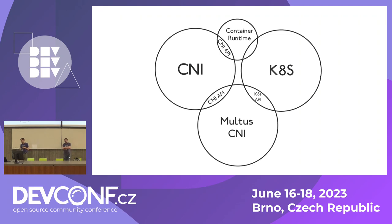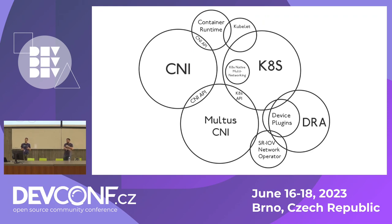These multiple interfaces might not only be virtualized interfaces. Sometimes you need to tap into a physical host interface, like SR-IOV. For that you need a device plugin, an SR-IOV network operator — which requires Multus, by the way — to get your pod an SR-IOV interface. The picture gets more and more complex depending on your use case. The more things you need, the worse the picture becomes.